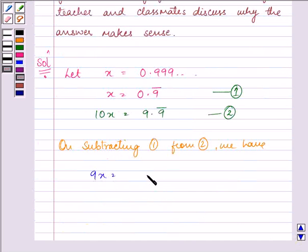9x is equal to 9.9 bar minus 0.9 bar, that gives us the answer as x is equal to 9 divided by 9, which says that x is equal to 1.